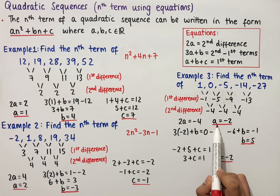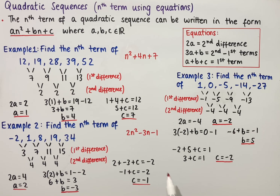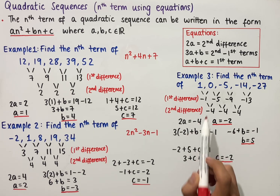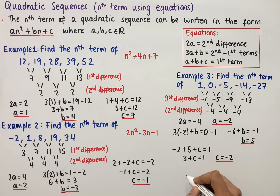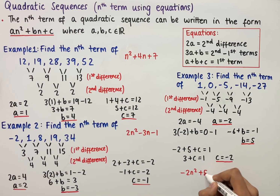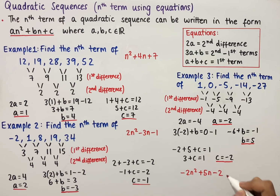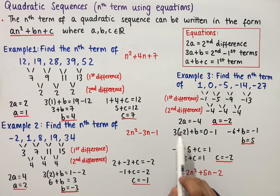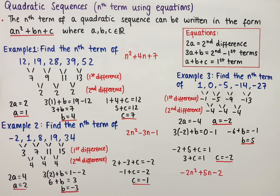Since we now have the values of a, b and c, we can work out the nth term of this sequence, which gives us minus 2n squared plus 5n minus 2. And this is the nth term of this sequence. That is how you work out the nth term of quadratic sequences using the equations method.